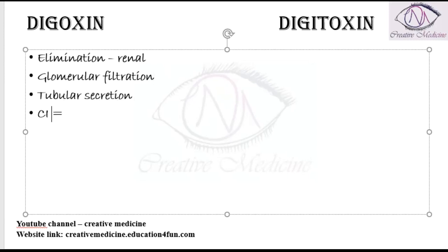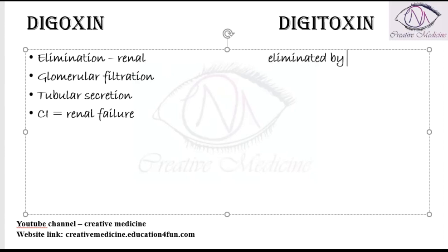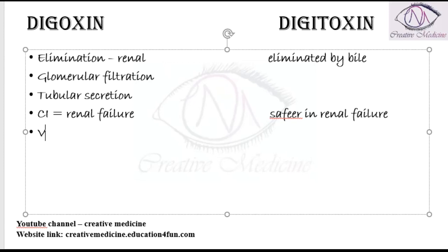Because the elimination of digoxin is by the renal route, it is contraindicated in cases of renal failure. Digitoxin, on the other hand, is eliminated by the bile and not by the renal route, so it is safer in renal failure and can be used in renal failure patients.